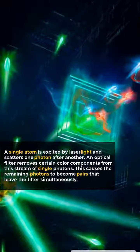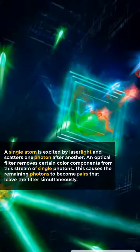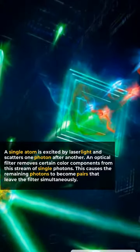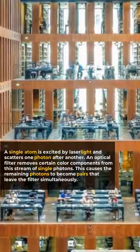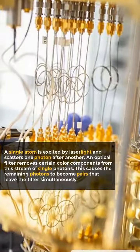A single atom is excited by laser light and scatters one photon after another. An optical filter removes certain color components from this stream of single photons. This causes the remaining photons to become pairs that leave the filter simultaneously.